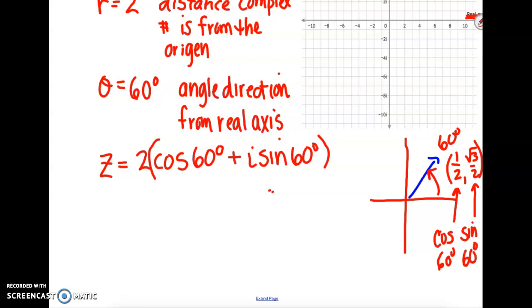So we're going to go ahead and substitute in those exact values. So z equals 2 times, the cosine of 60 degrees is 1 half, plus i times sine of 60 degrees which is exactly the square root of 3 over 2.